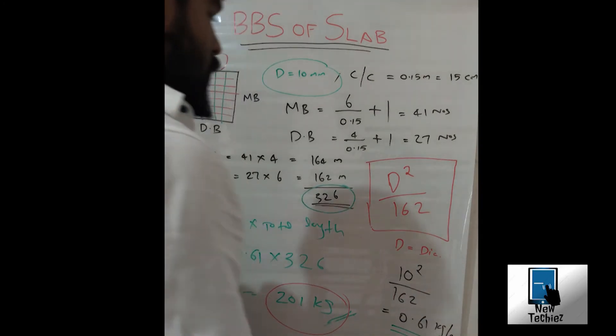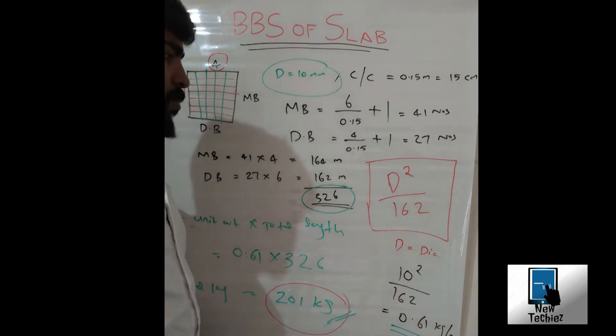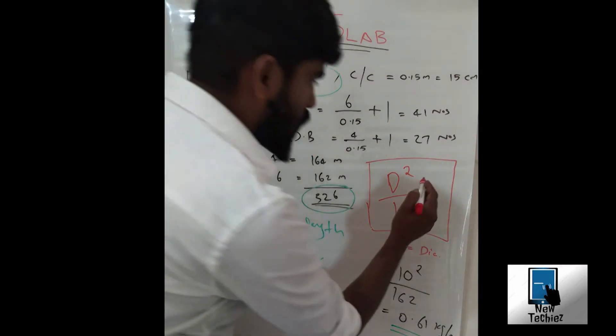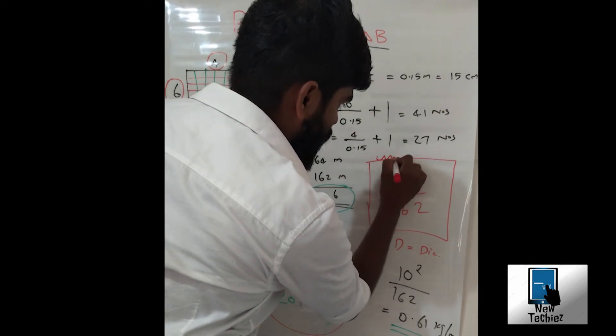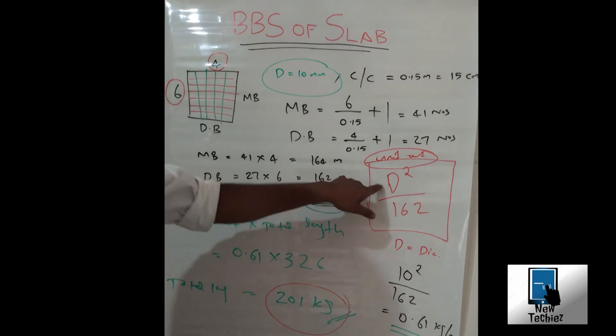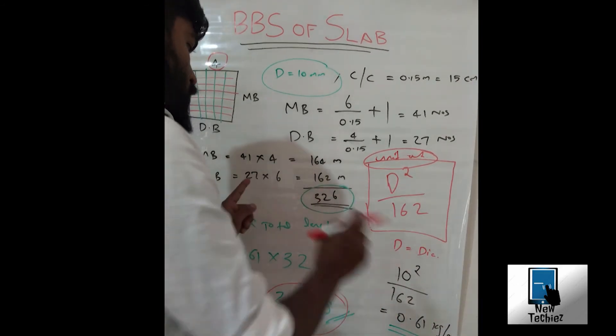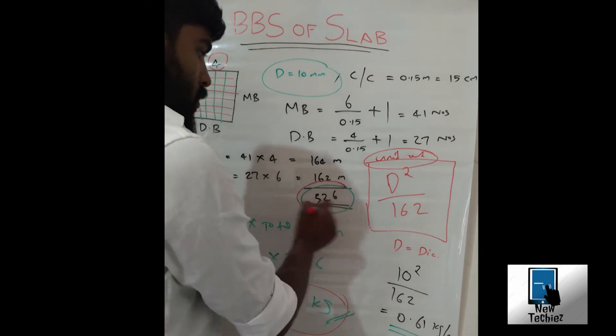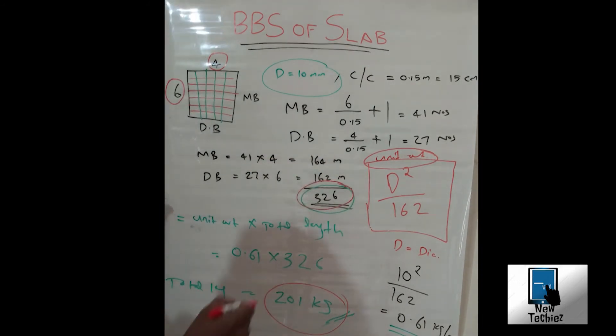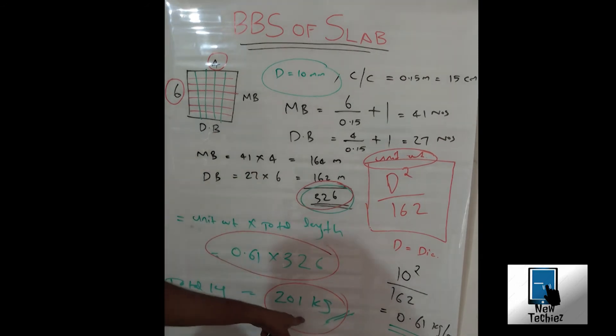For this calculation we only need two simple steps. We want to know the unit weight, this equation unit weight that is D square by 162. This amount is applied to total length, that is 326. By addition of this we get a value of 201. This is the total amount which we require.